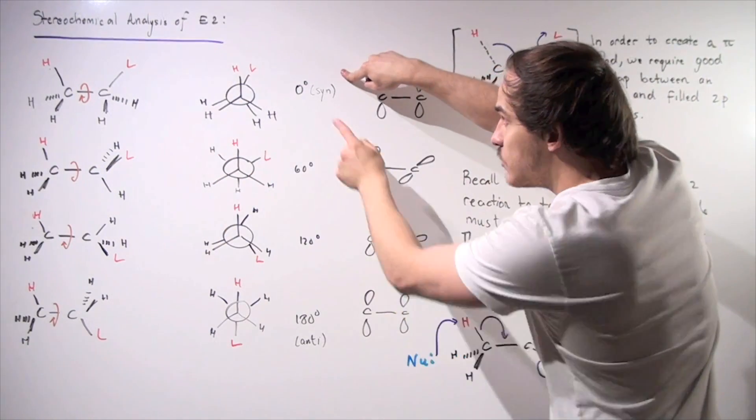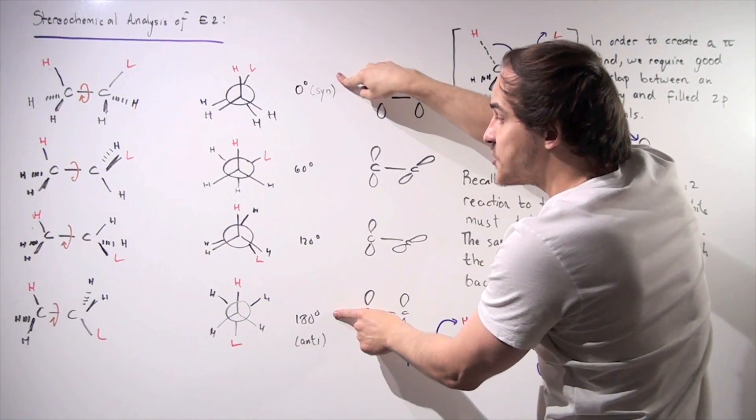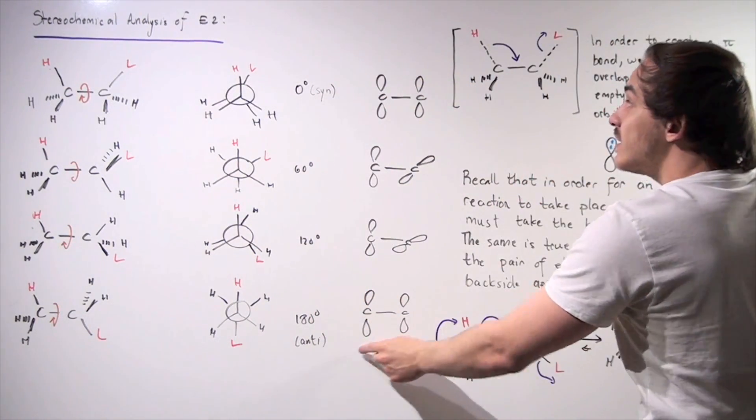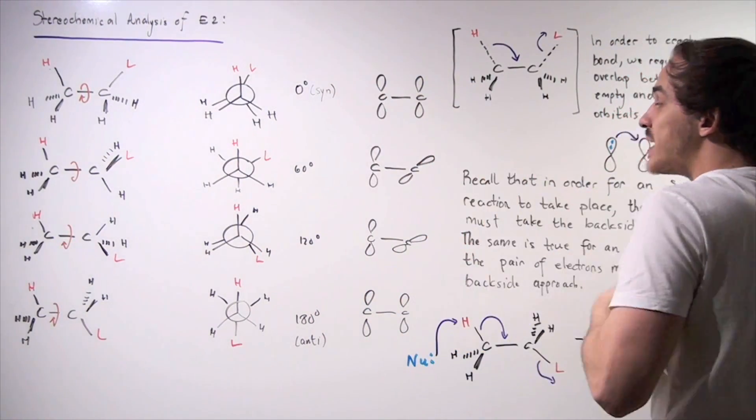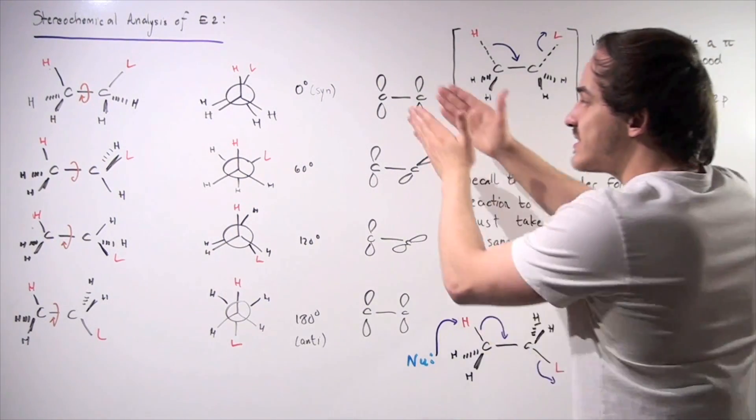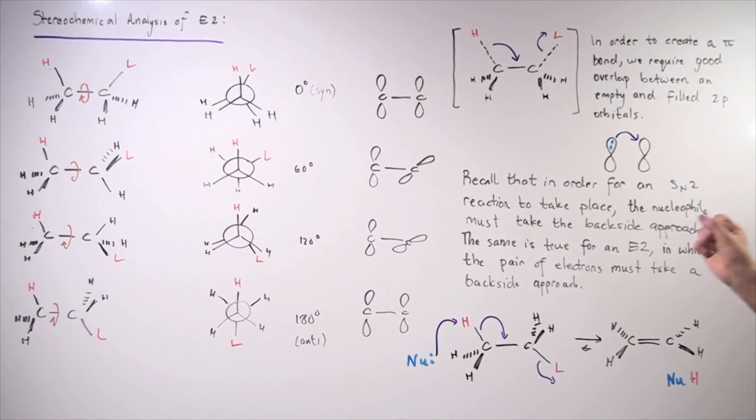In the syn, zero degrees, and anti, 180 degrees, we have our parallel orientation. So now we have to figure out, is it the syn or is it the anti? Well, let's see.